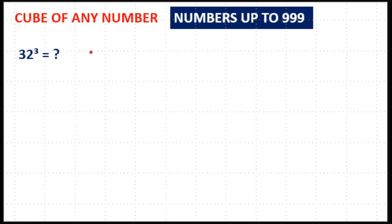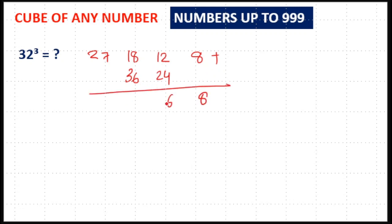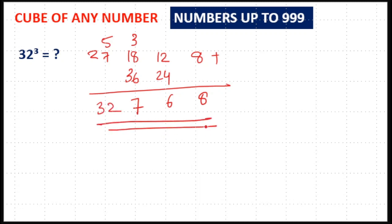Next is 32 cube. 3 cube is 27, 2 cube is 8. 3² × 2 = 9 × 2 = 18, and 2² × 3 = 4 × 3 = 12. Double of 18 is 36, double of 12 is 24. Adding: 8; 24 + 12 = 36 — write 6, carry 3; 36 + 3 = 39, 39 + 10 = 49, 49 + 8 = 57 — write 7, carry 5; 27 + 5 = 32. So the answer is 32768.